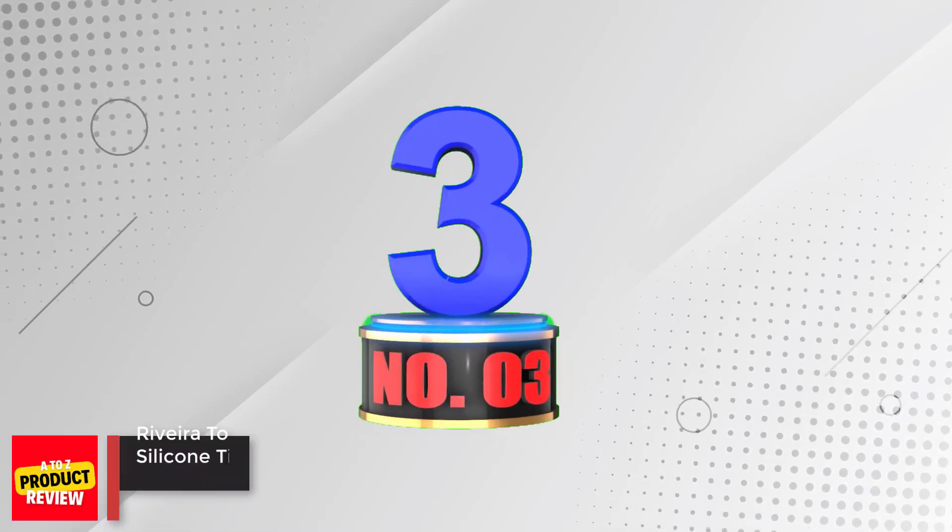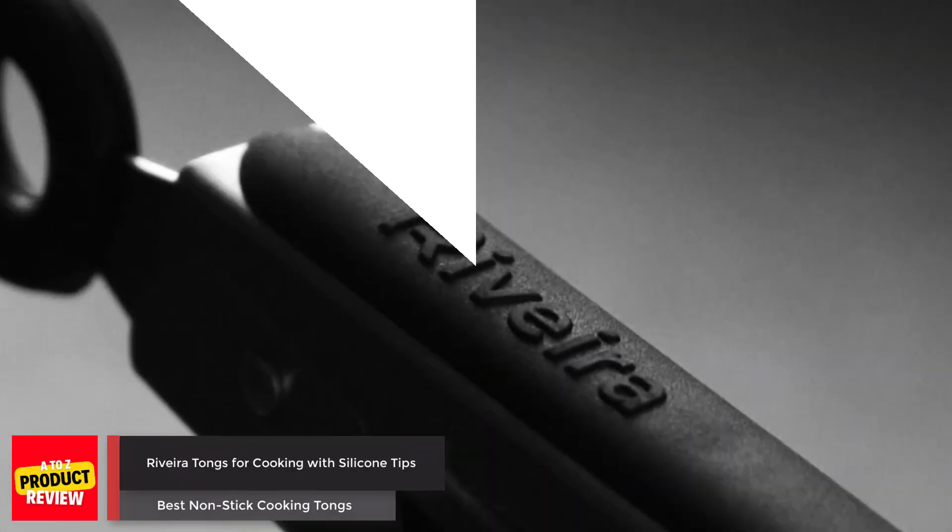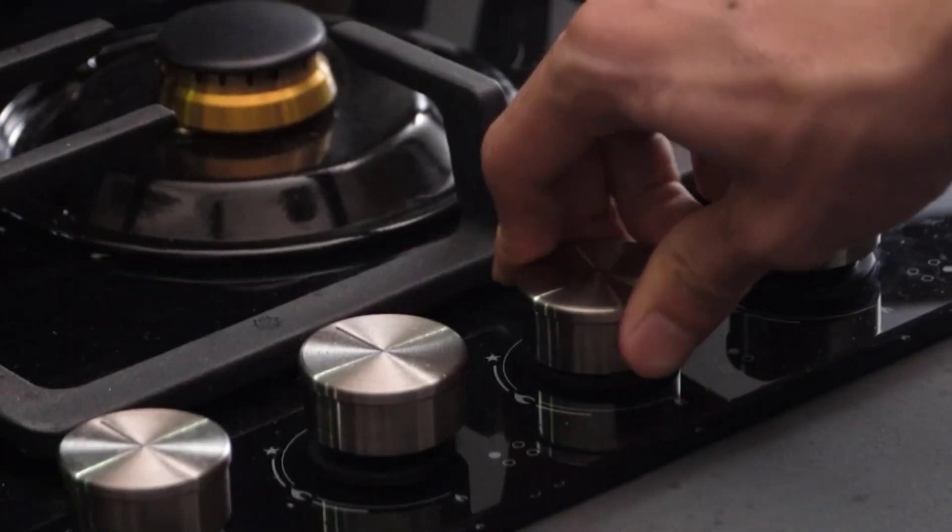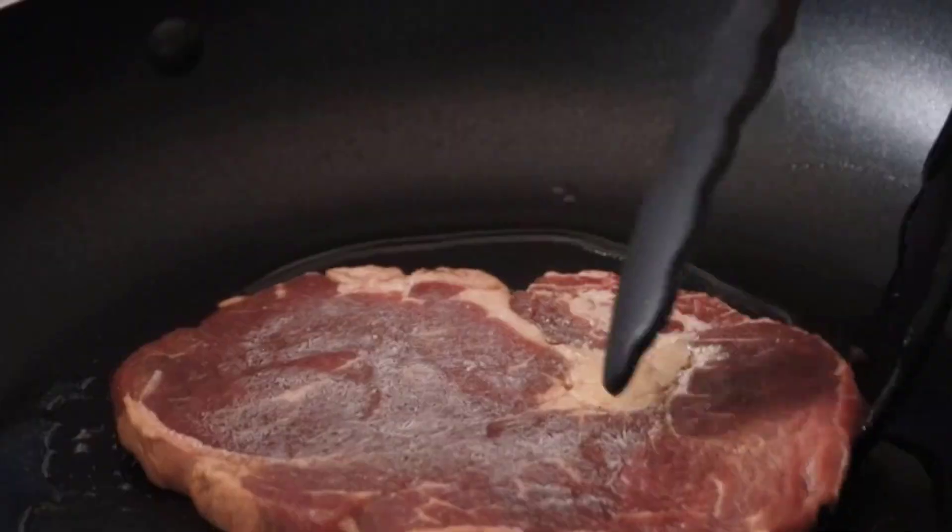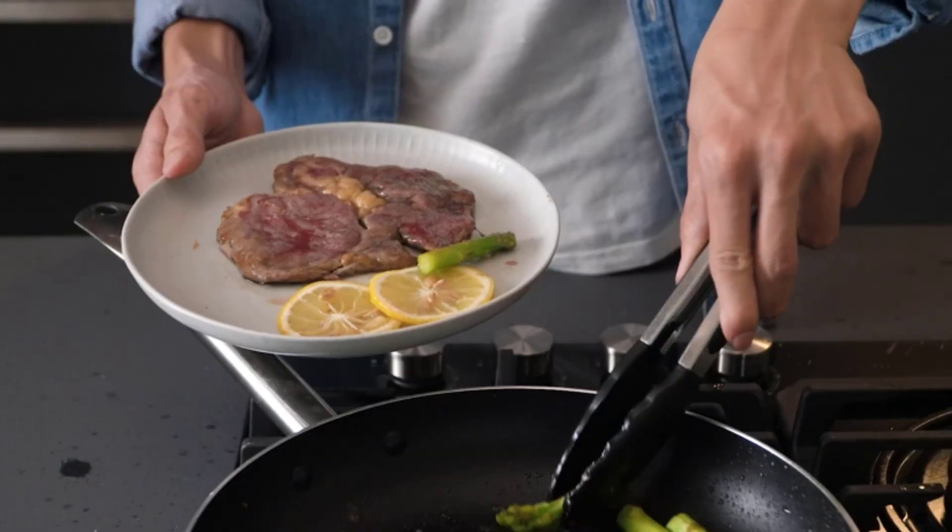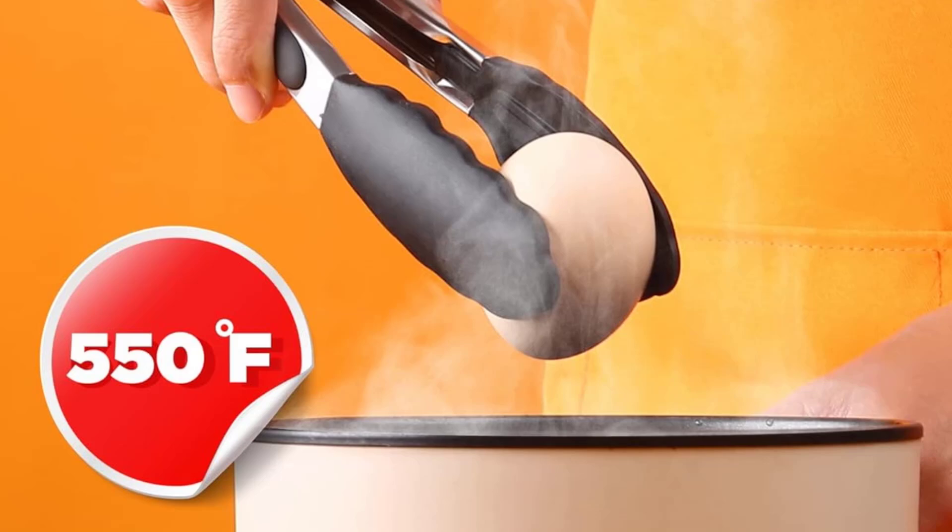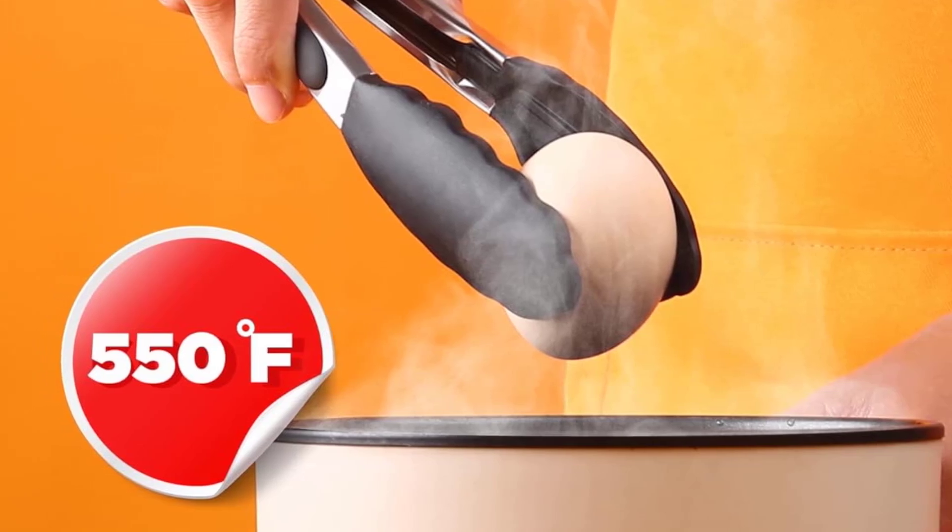Number three: Rivera Tongs for Cooking with Silicone Tips. Rivera cooking tongs with silicone tips are designed to make cooking, grilling, and food-handling easier with sturdy, reliable picking and grabbing of hot foods. Made of high-quality 304 stainless steel and heat-resistant silicone tips.